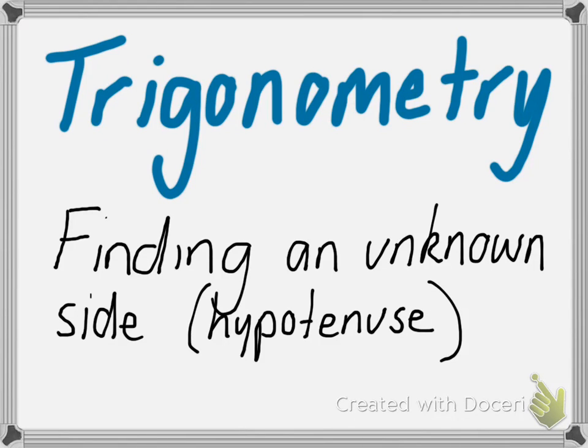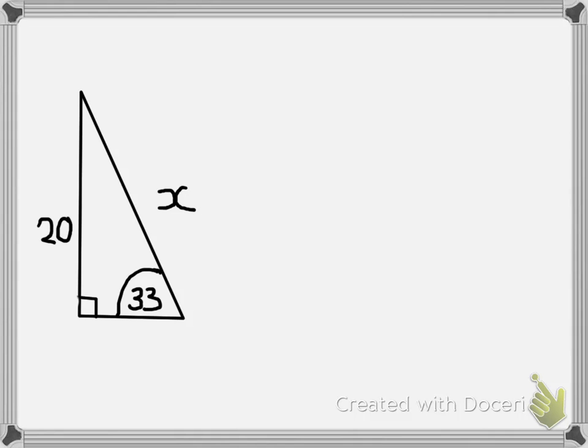Hi everyone, this is another trigonometry video. This time we're going to be finding an unknown side of a right angle triangle, and in particular we're going to be finding the hypotenuse. As you can see here, I have a right angle triangle with an angle of 33 degrees, a side that's given to us of 20, and an unknown side of x.